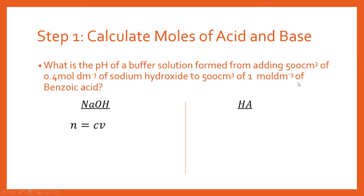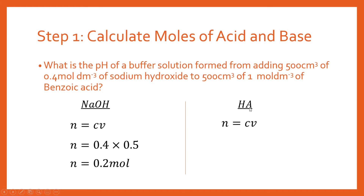We substitute what we know: we have a concentration of 0.4 mol/dm³ and a volume of 500 cm³, which we divide by 1000 to get 0.5 dm³. So 0.4 × 0.5 gives us 0.2 moles of our base, sodium hydroxide. Exactly the same calculation for our acid: concentration of 1 mol/dm³ and volume of 500 cm³, converted to 0.5 dm³, giving us 0.5 moles of acid.